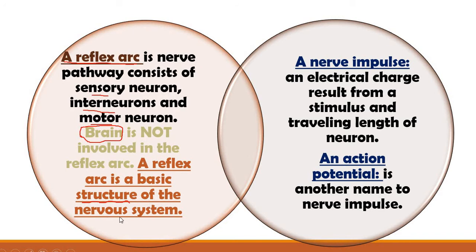What is the difference between the reflex arc and the neuron? Neuron is the basic structural unit of the nervous system, while the reflex arc includes all the sensory neurons, interneurons, and motor neurons pathway. It is the basic structure of the nervous system that makes it work, and the brain is not included in this reflex arc.